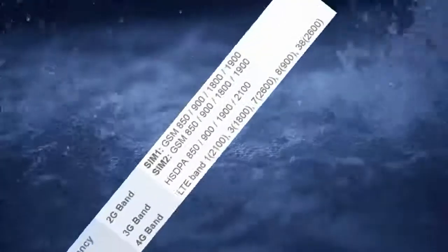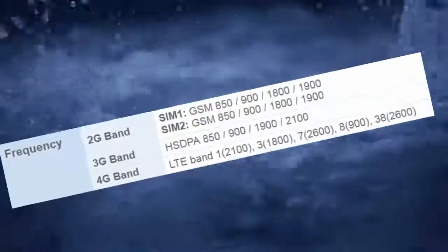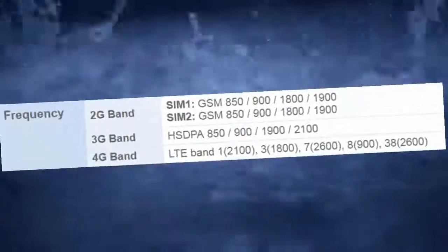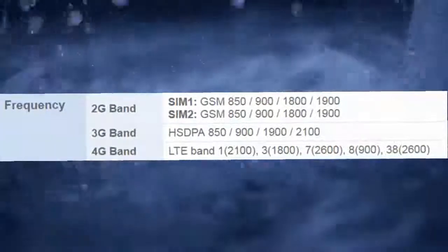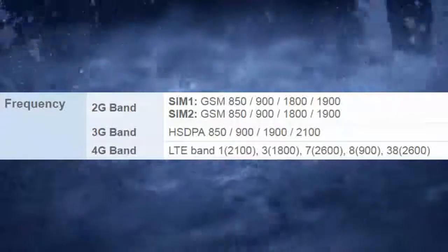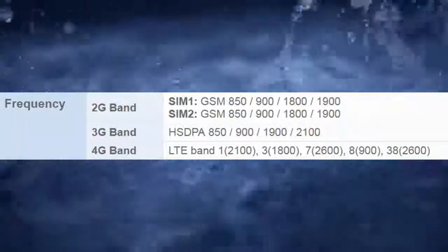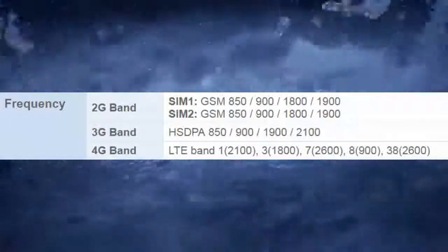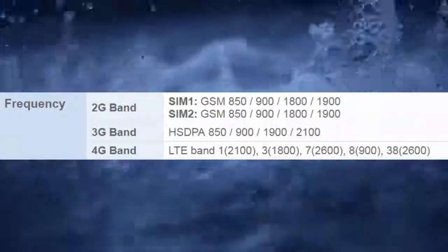Frequency 2G Band: SIM 1 GSM 850, 900, 1800, 1900. SIM 2 GSM 850, 900, 1800, 1900. 3G Band HSPA: 850, 900, 1900, 2100.